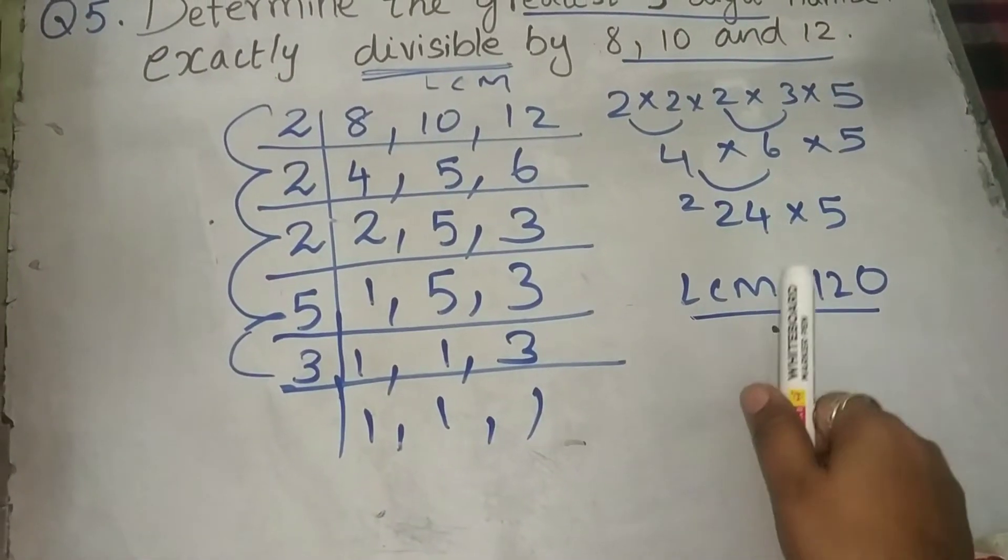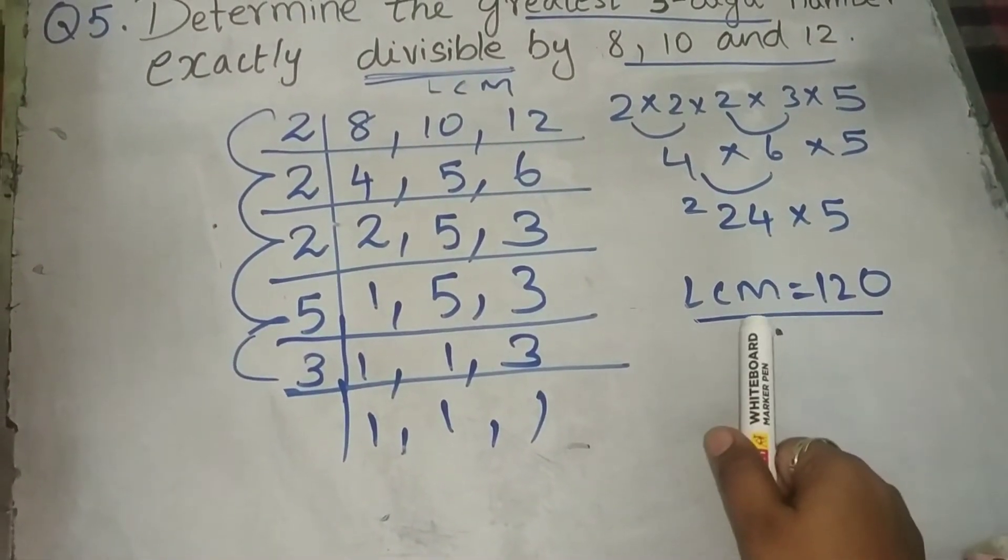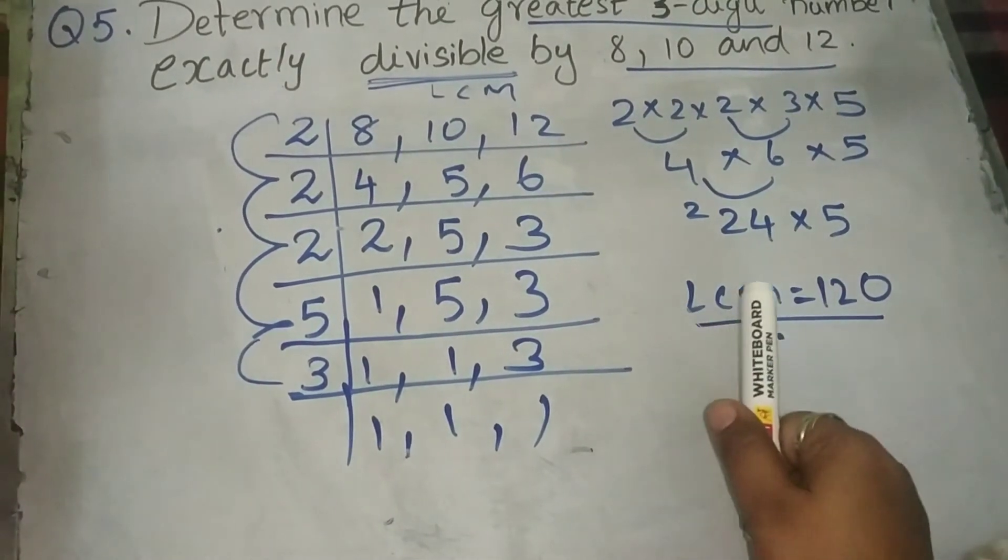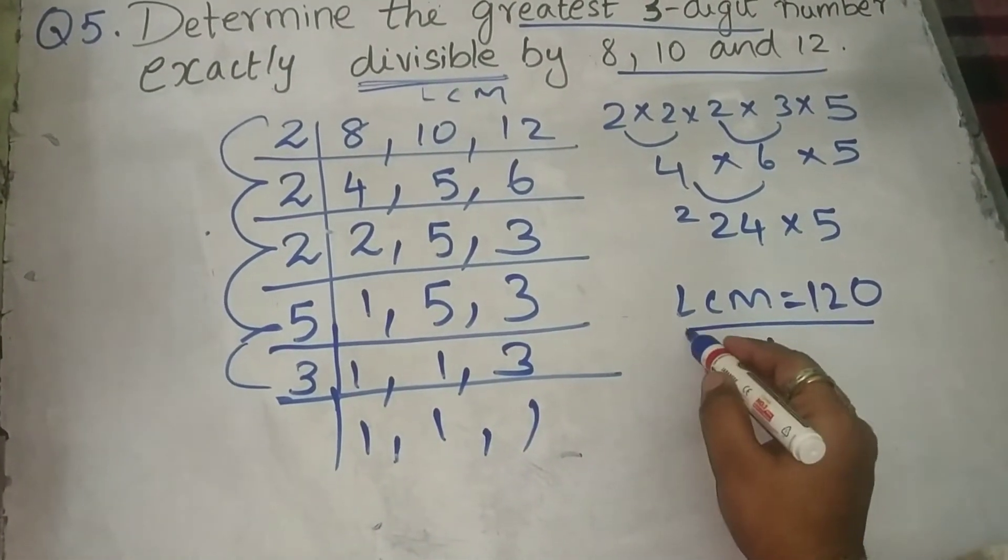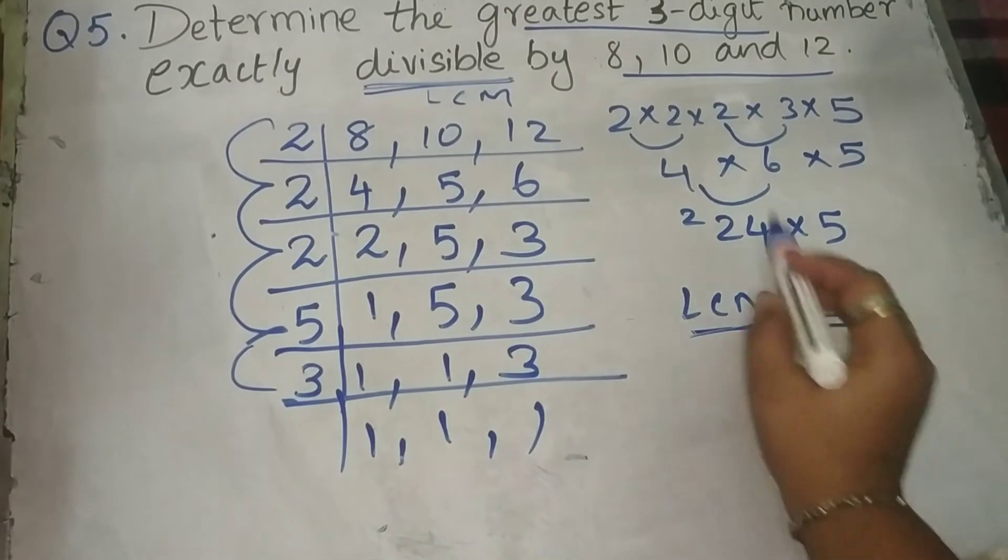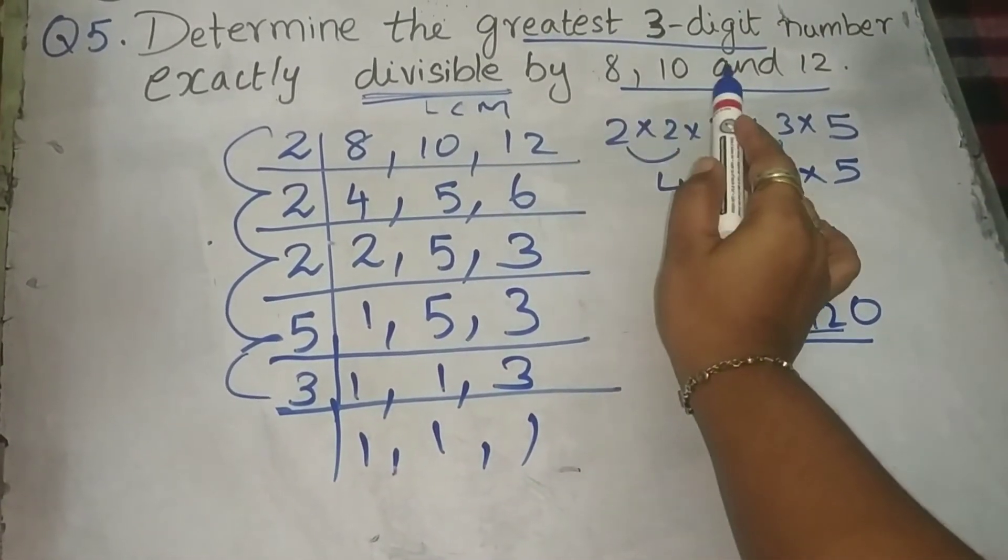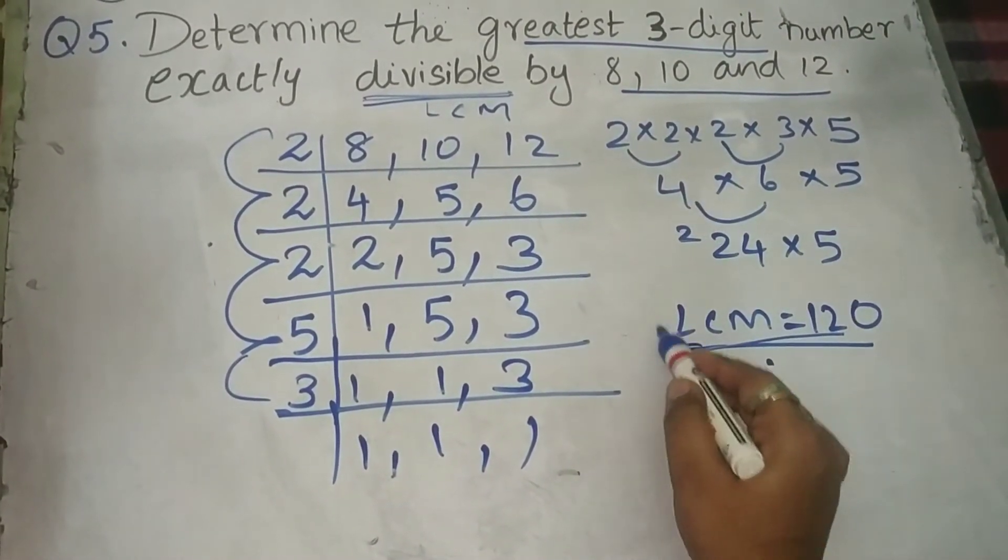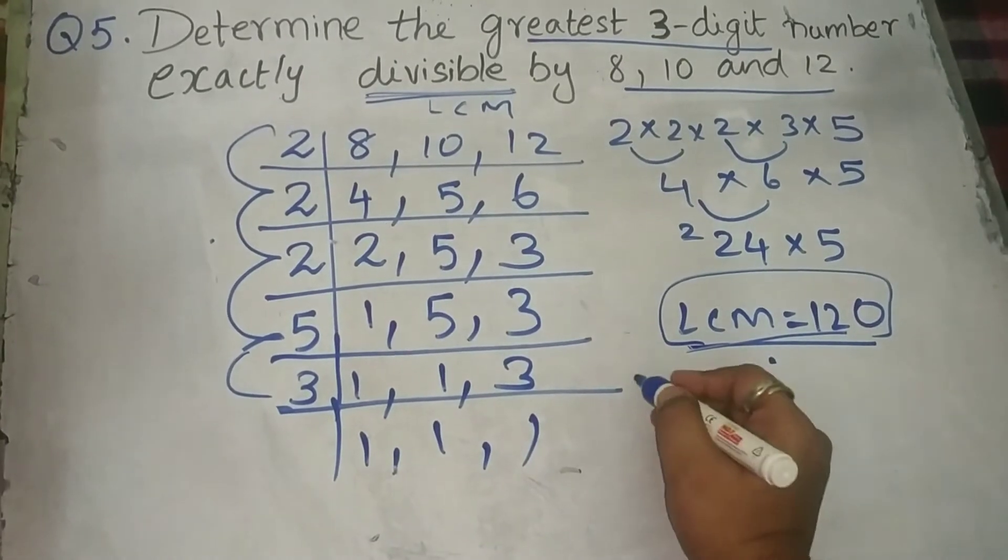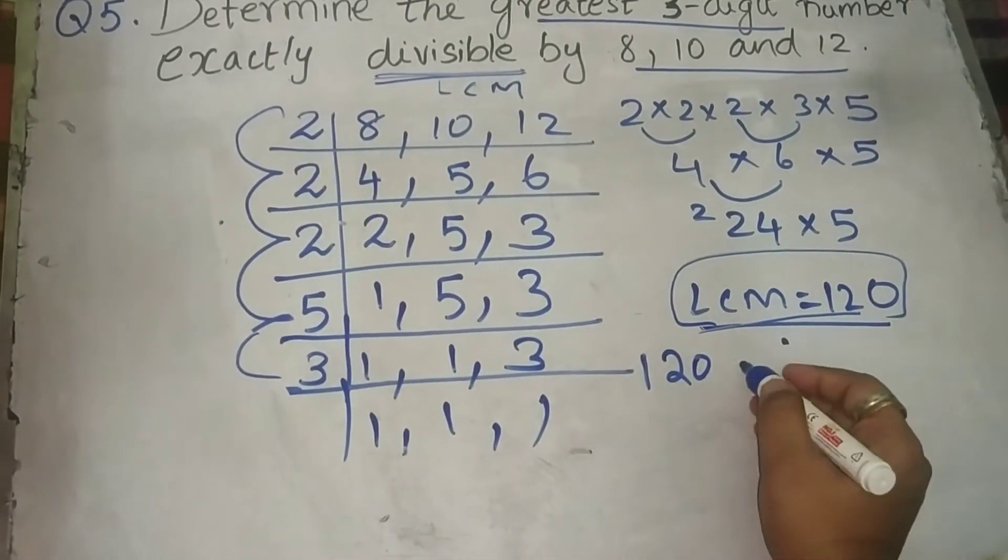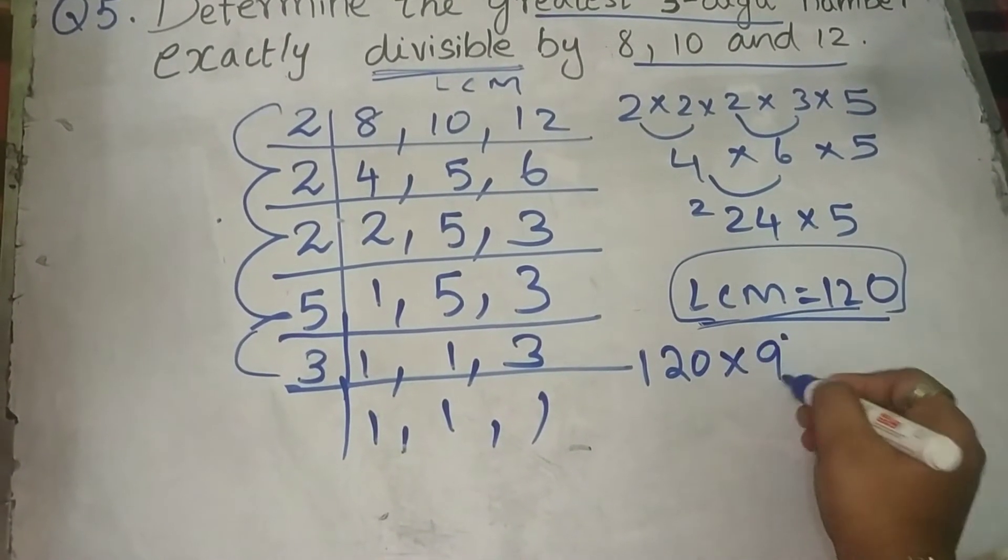So, here also, you will be having 2 methods. So, first method, we will be doing it right now. So, here we got the LCM as 120. And they asked you to find the greatest number. So, we will check with the multiples of 120. So, greatest means we will start with the 9 times.